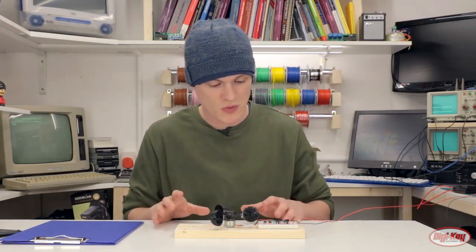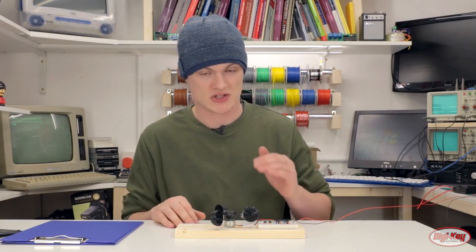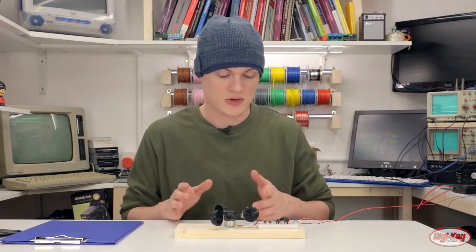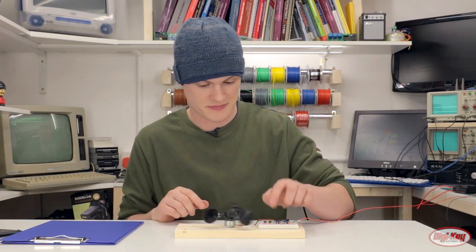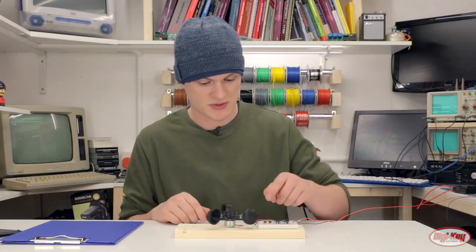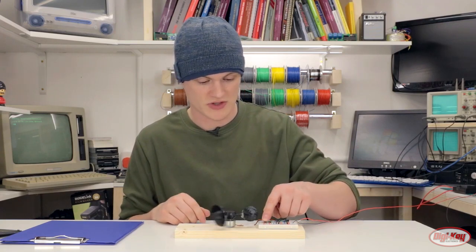I've got the voltage to the circuit set at 1.6 volts, and the reason is because I want to keep the heat dissipation as low as possible. All we have to do now is either press one or the other and the motor will change directions. And then pressing the other switch to make the motor go the other way.